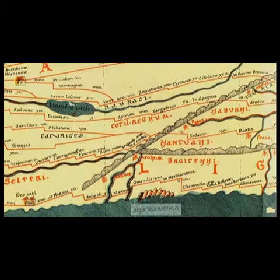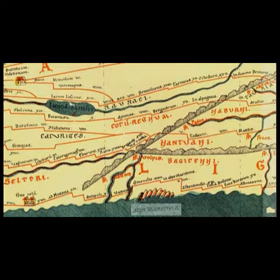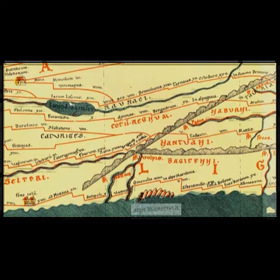On voit le Grand-Saint-Bernard probablement, puisqu'on est à Aoste, Martigny, et puis l'autre voie côté France vers la Méditerranée. C'est une carte très désorientante parce qu'elle est longiligne, longitudinale, représentant toutes les routes de l'Empire du sud vers le nord. On a d'ailleurs au niveau de la Rhétie : Jurassia, nord, lac Léman.